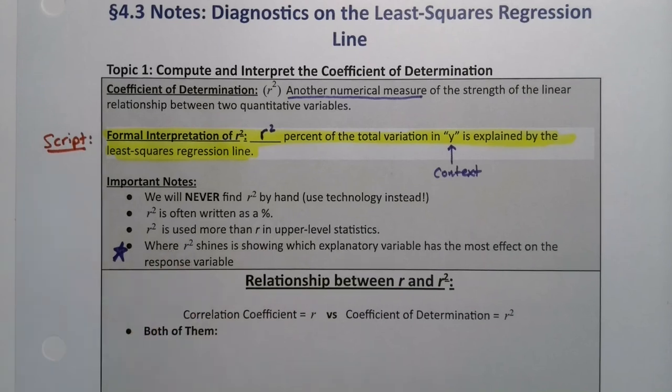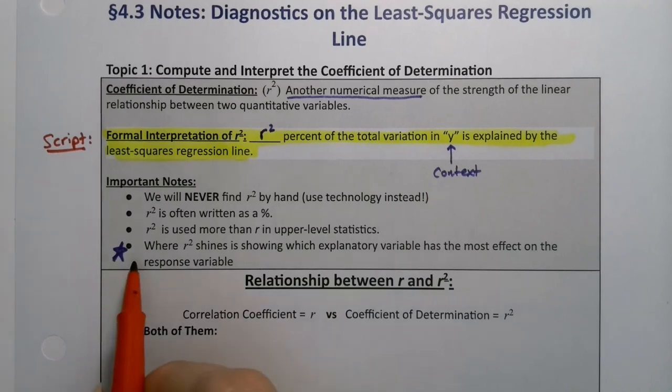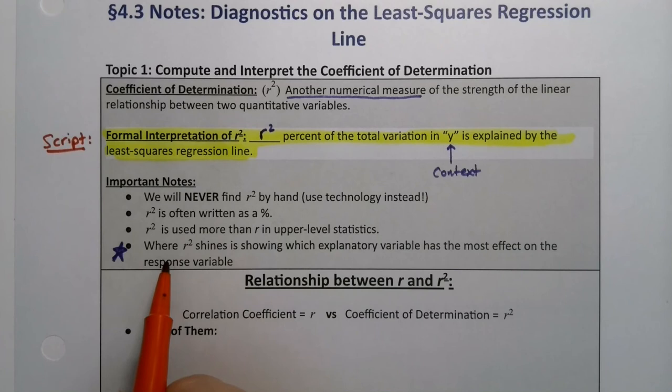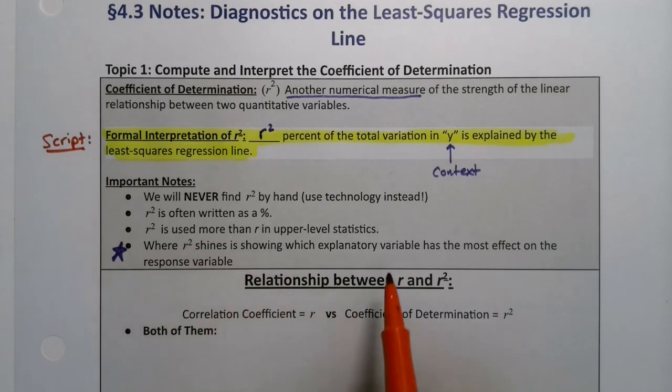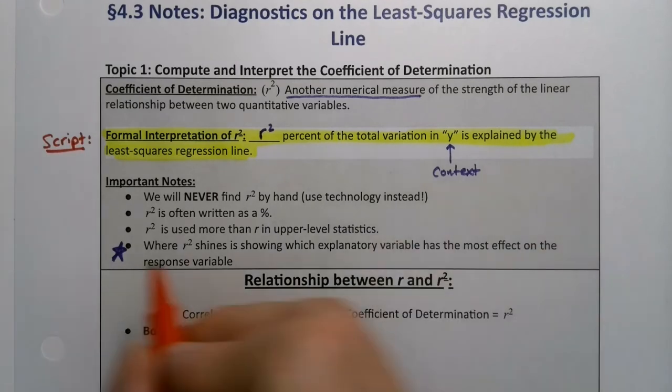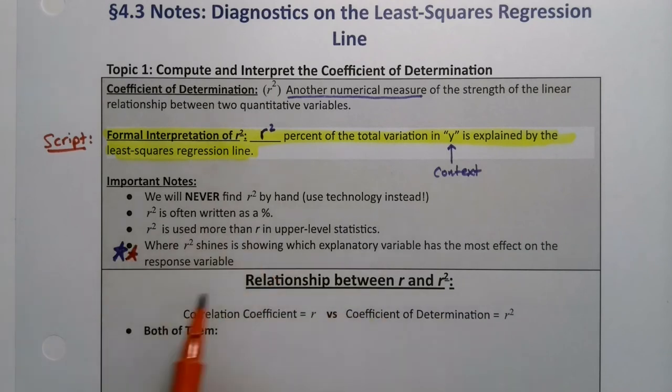Because where r squared really shines is showing which explanatory variable has the most effect on the response variable. And this is the way you're going to see it. That's why I've starred it. So you'll see it in tables of results, say, for a medical study. They'll try all different explanatory variables on a particular response variable. And the one with the r squared that's the highest is the one that has the most effect, or is the best explanatory variable for that particular response variable. And that you will see. You'll see it in medical textbooks, nursing textbooks. You'll see it in criminal justice textbooks. It shows up. So that's how we want you to be able to know what it is. So that way, when you see r squared, you'll know exactly what it's talking about.